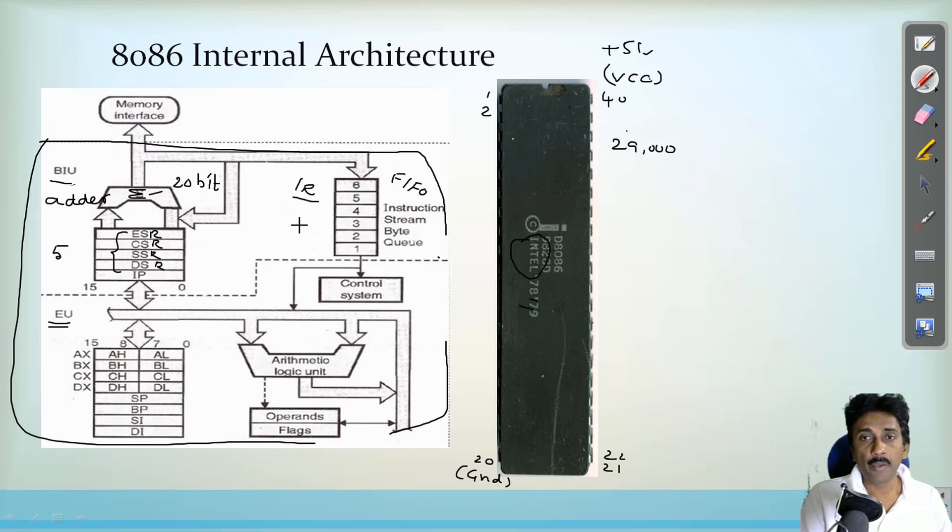So the main units in the bus interface unit is the microprocessor can be divided into two units. One is the bus interface unit and second one is the execution unit that we have already seen. In bus interface unit adder will be there as well as queue provided as well as registers provided.